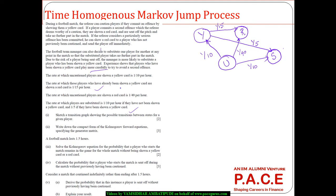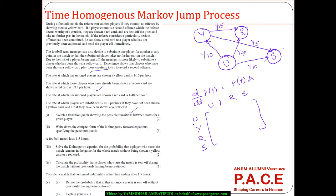Now, write down the compact form of the Kolmogorov forward equation: d/dt P(t) = P(t) × A, where A is the generator matrix. Denoting the states as uncautioned (U), yellow (Y), red (R), and substituted (S): the transition rate from U to Y is 1/10, from U to R is 1/40, and from U to S is 1/10. The diagonal entry for staying in U is minus the sum of these: −(4/40 + 1/40 + 4/40) = −9/40.